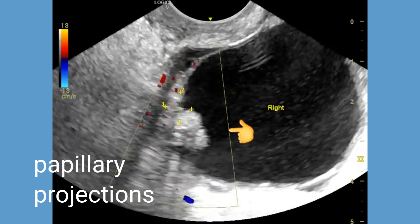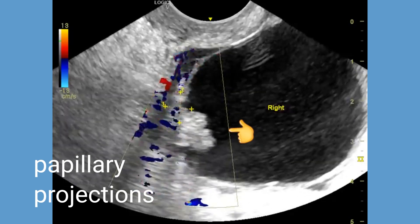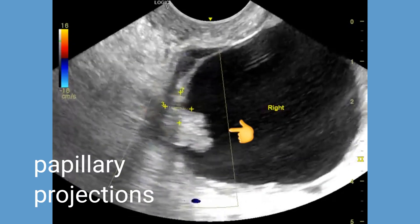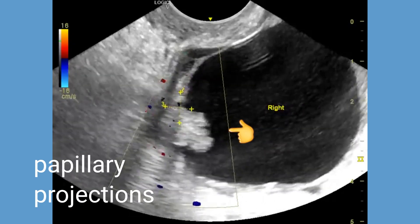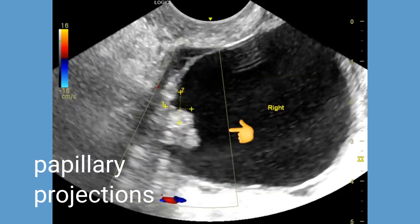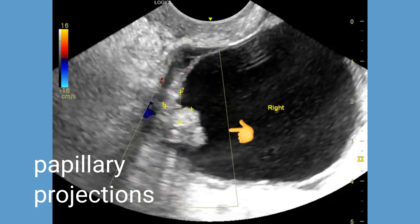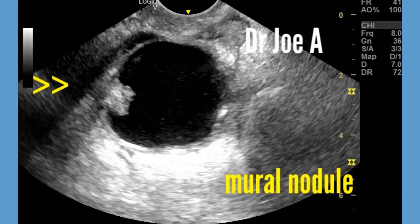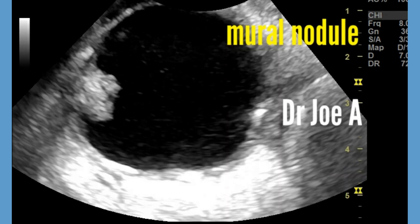Papillary projections are wall projections that are at least 3 mm in height and perpendicular to the wall of the cyst. They are suspicious features for malignancy, especially if they are involving more than 50% of the internal cyst wall.